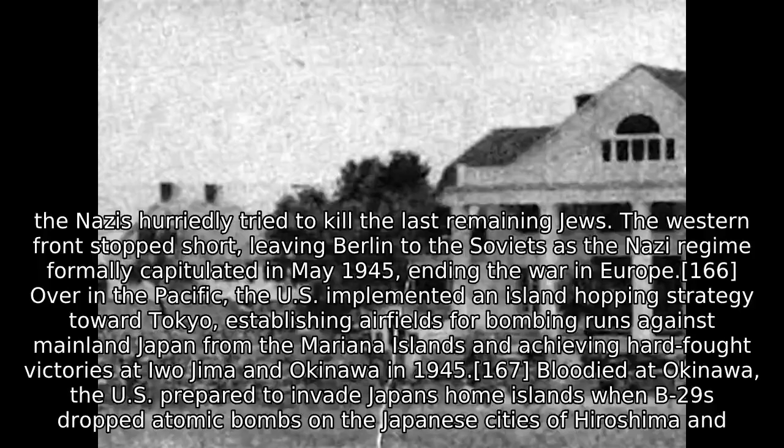The Allies pushed the Germans out of France but faced an unexpected counterattack at the Battle of the Bulge in December. The final German effort failed, and as Allied armies in East and West were converging on Berlin, the Nazis hurriedly tried to kill the last remaining Jews. The Western Front stopped short, leaving Berlin to the Soviets as the Nazi regime formally capitulated in May 1945, ending the war in Europe.